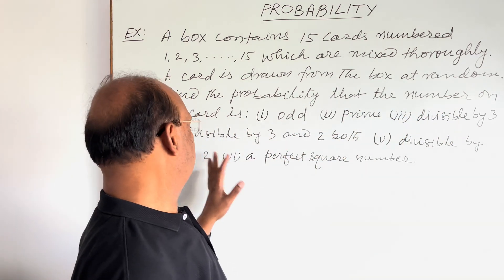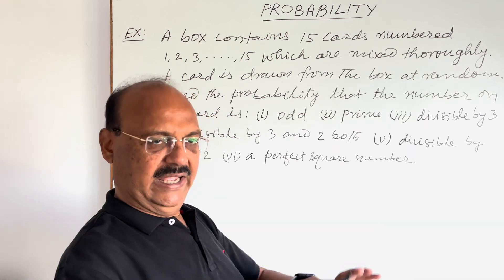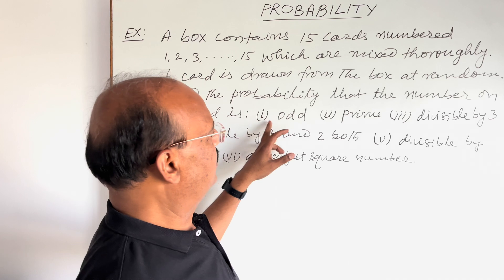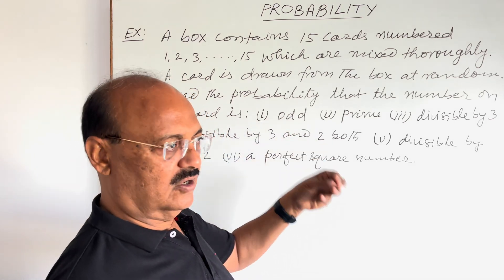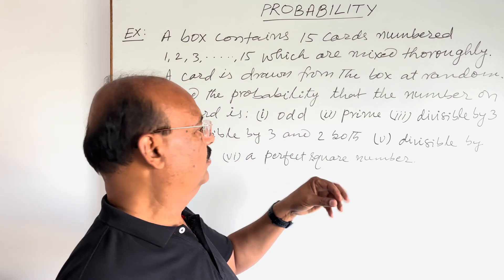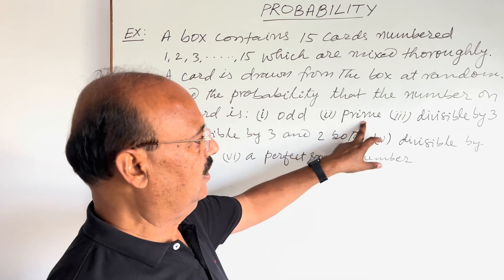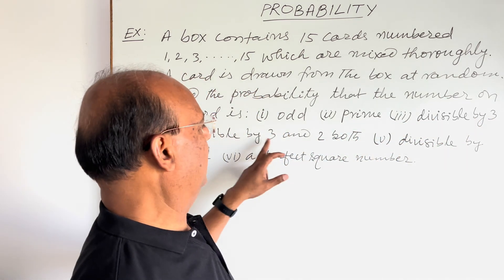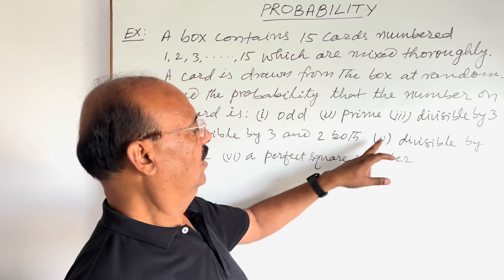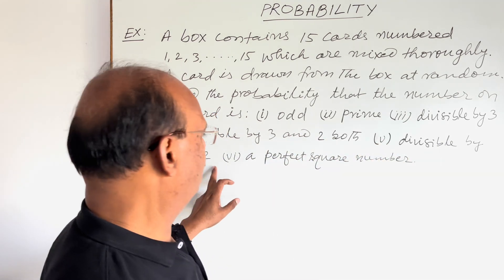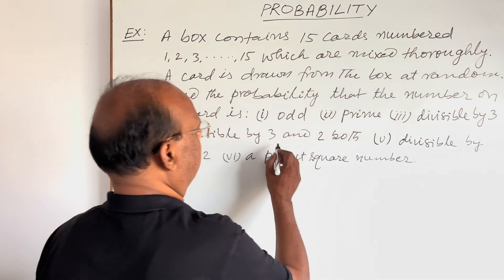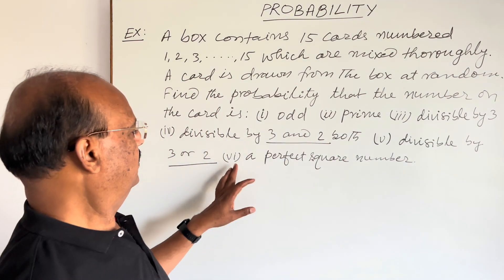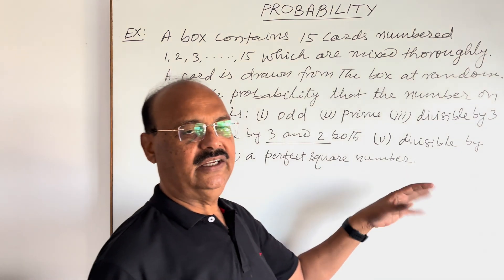Find the probability that the number on the card is: The question is having 6 parts, covering maximum types of questions. First, odd number. Second, prime number. Third, divisible by 3. Fourth, divisible by 3 and 2 both. Fifth, divisible by 3 or 2. There is a difference here. This is 3 and 2, this is 3 or 2. And sixth, a perfect square number.